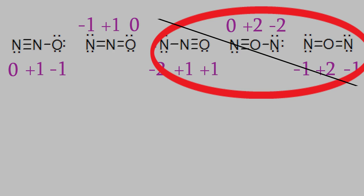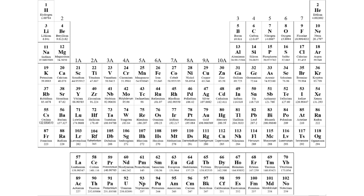So we're almost done, but we still have two structures to choose from. Both of them have atoms with formal charges of zero, one, and minus one. How do we decide which is more likely? It turns out that the most likely structure is the one that has the most negative formal charge on the most electronegative atom. You might recall that the electronegativity is higher when we go up and to the right on the periodic table. So oxygen is more electronegative than nitrogen. That means the most likely structure is the one where the oxygen has the lowest formal charge, and that's this one.